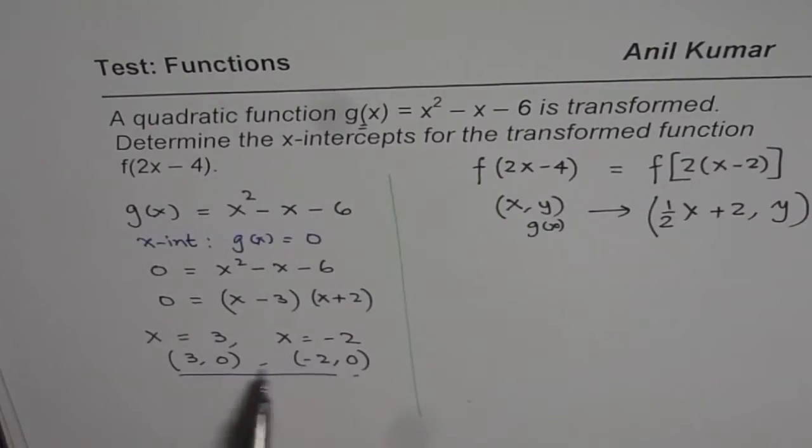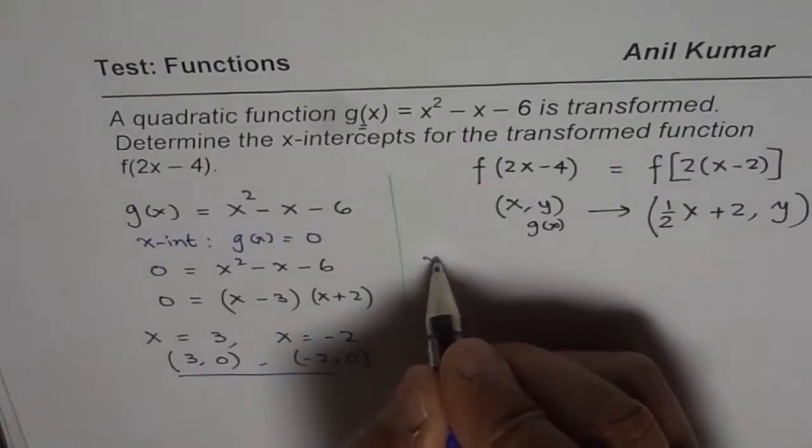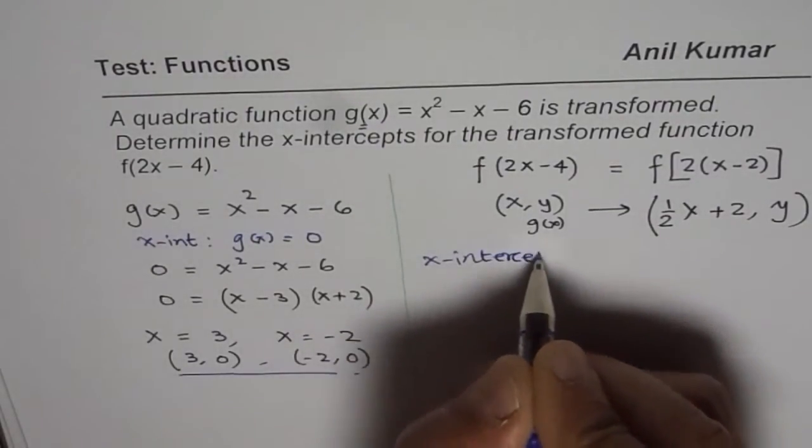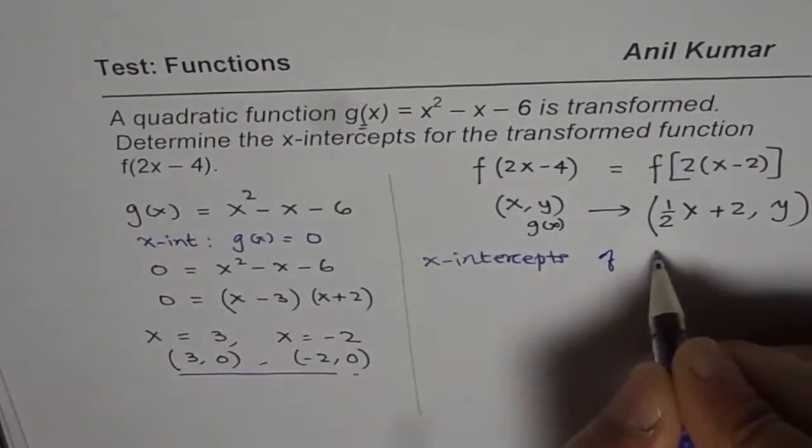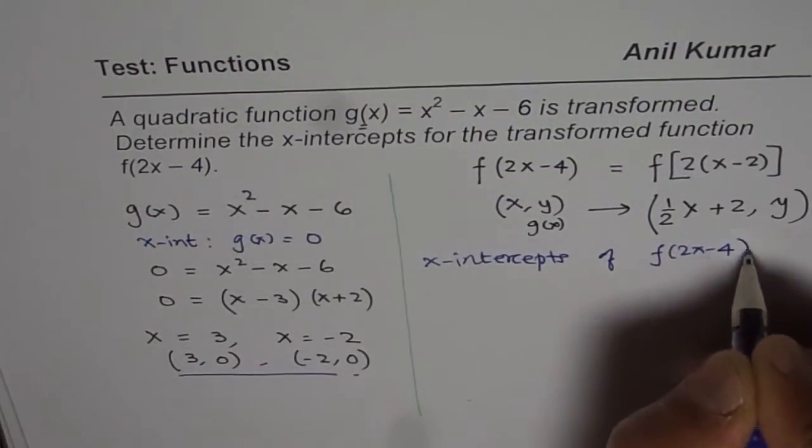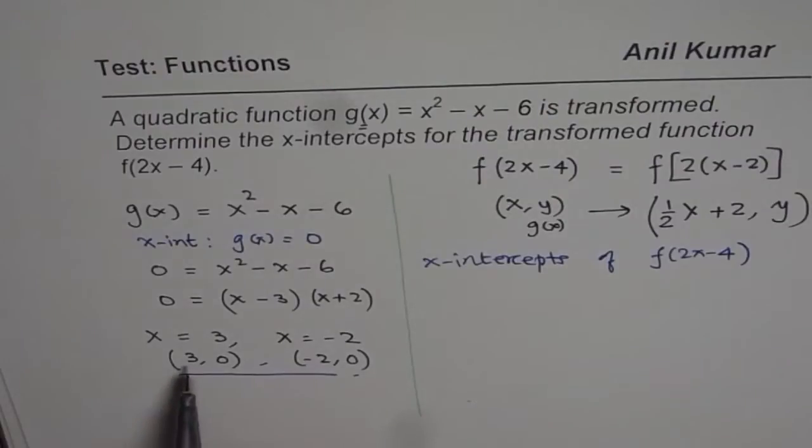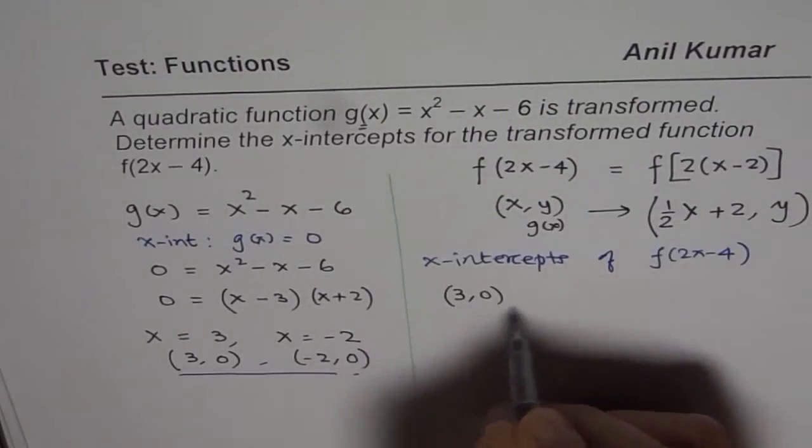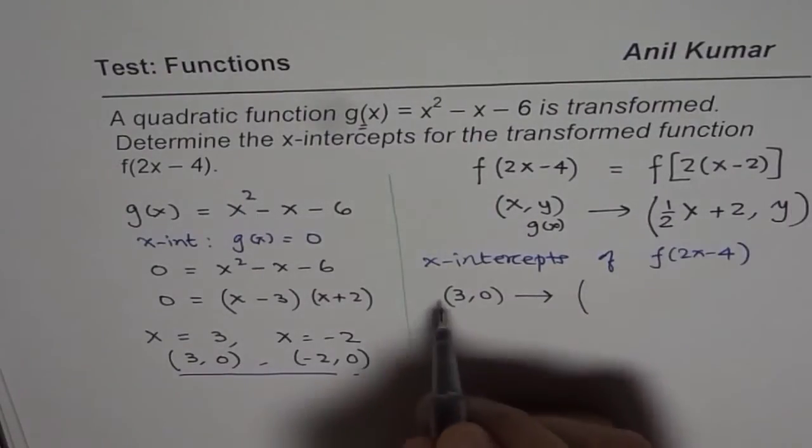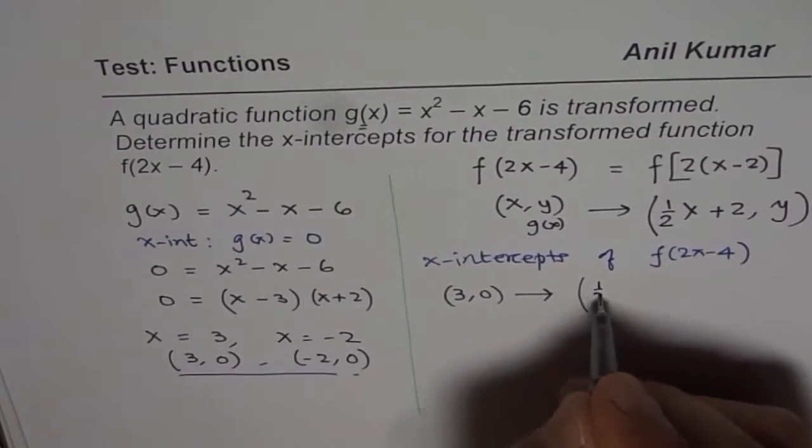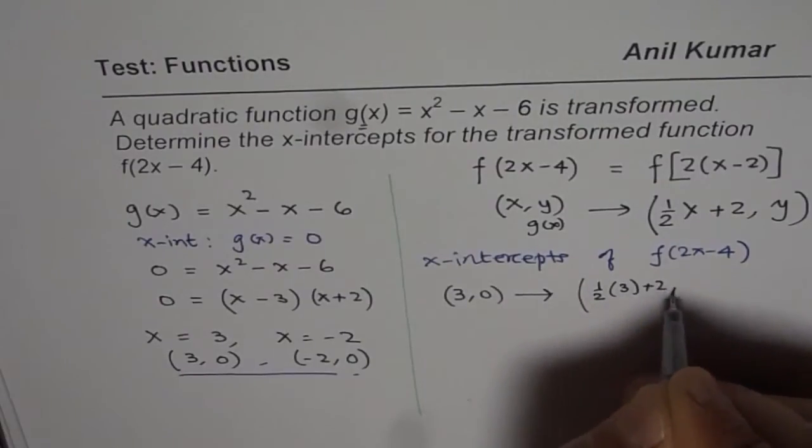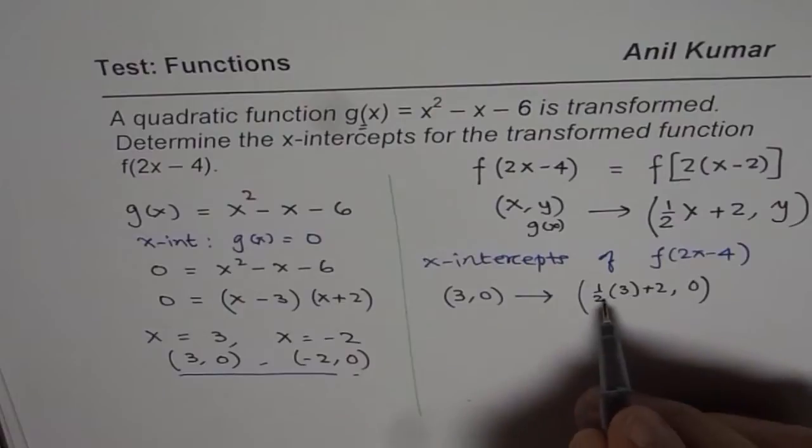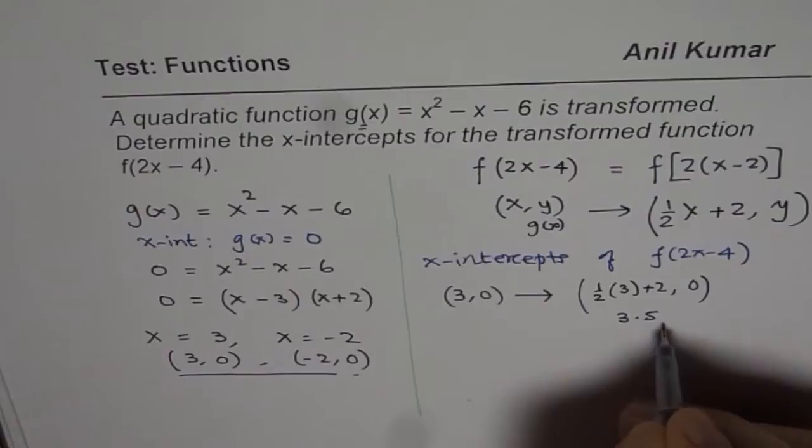The x-values are going to change. The x-intercepts of f(2x - 4) are: first, (3, 0) transforms to (1/2)(3) + 2, which is 1.5 + 2 = 3.5 for the x-value, giving us (3.5, 0).